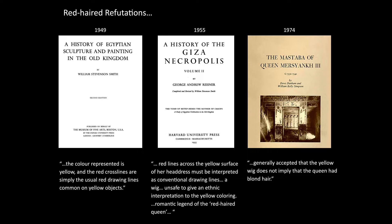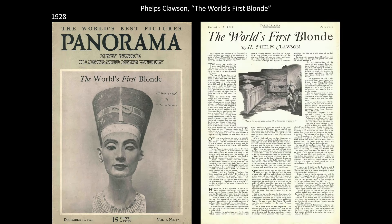To set the record straight: William Stevenson Smith and others had to set aside these interpretations of Marisanq and her 'blonde hair.' In 1949, in A History of Egyptian Sculpture and Painting, Smith wrote that 'the color represented is yellow and the red cross lines are simply the usual red drawing lines common on yellow objects.' In the Hedda Paris volume of Giza Necropolis, he wrote that the red lines must be interpreted as conventional drawing lines for a wig, and it is 'unsafe to give an ethnic interpretation to the yellow coloring.' By the early 1970s, Dunham and Simpson published the tomb of Marisanq and stated it was 'generally accepted that the yellow wig does not imply that the queen had blonde hair.' The interpretation was set aside: it was a wig, the red lines were guidelines, and Hedda Paris II was indeed an Egyptian.